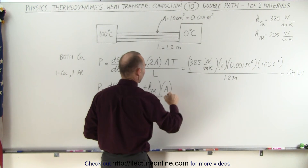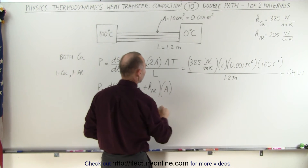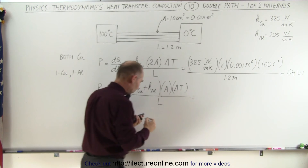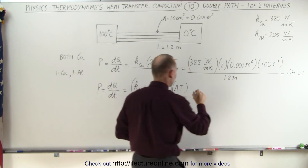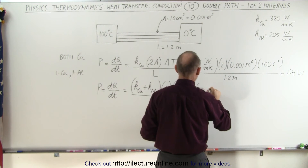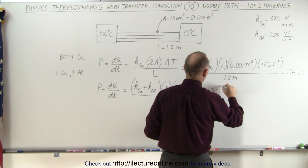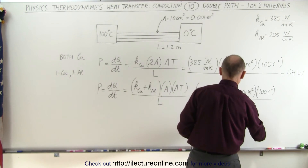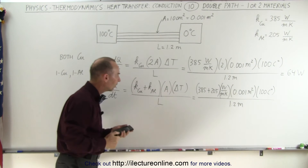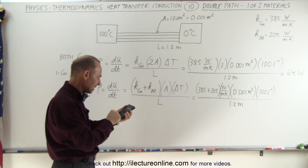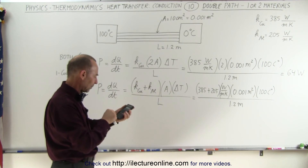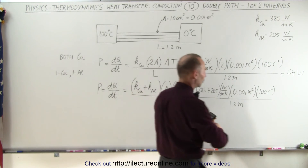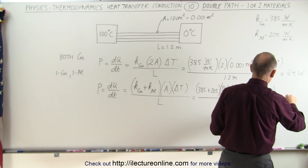So now we simply have a single area, because we account for both of them, times the difference in temperature, all divided by the length — they're the same length. When we do that, we add the two coefficients: 385 plus 205 watts per meter times Kelvin, which gives 590. So that's 590 times 0.001 divided by 1.2, and we get approximately 49 watts.